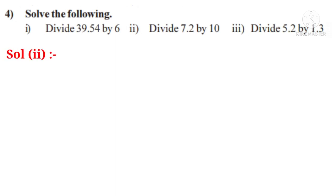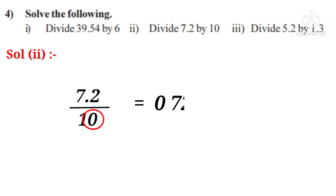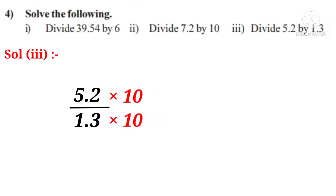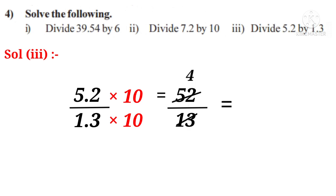Solution 2: Divide 7.2 by 10. That means 7.2 by 10. We have to multiply with a number which has only one zero after 1, that is by 10. The decimal point in the numerator will shift right side after one digit. So it becomes 52, and the denominator becomes 13. On simplification by 13, the answer is 4.